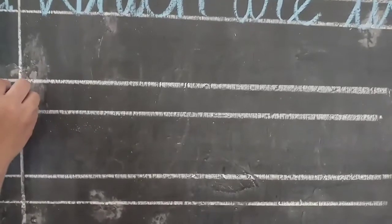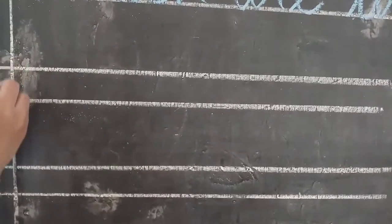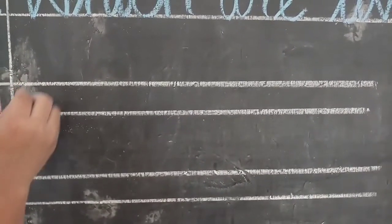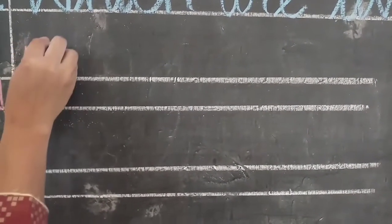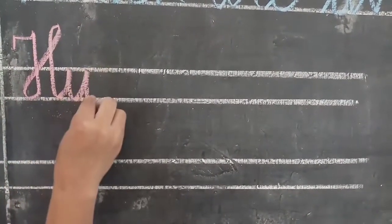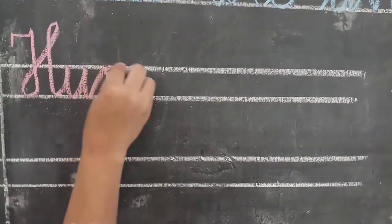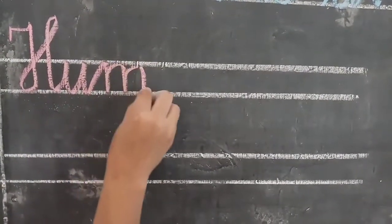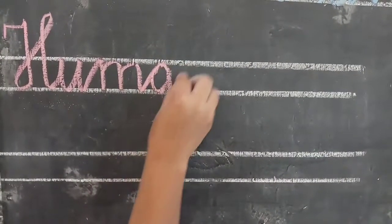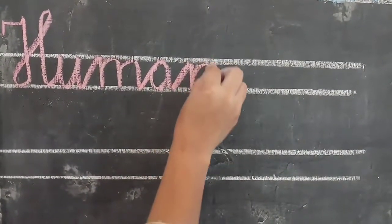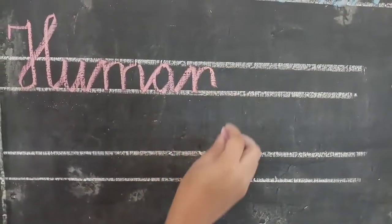Living things mein teen group aa jaatei hain. Sib se pahala, number 1. Leave one line and write number 1: Human beings. H-U-M-A-N, human beings.